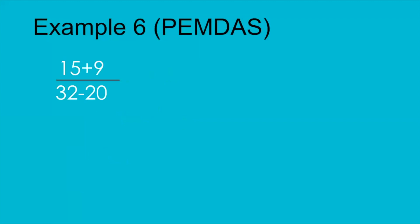Here is another example involving a rational expression. Before doing anything else, we solve the top portion and the bottom portion separately to get one number on top and one on the bottom so we can divide them. The numerator: 15 + 9 = 24. The denominator: 32 − 20 = 12. So 24 ÷ 12 = 2. That's the answer.